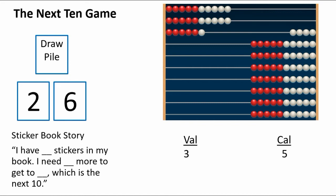When it's my turn, I'm going to turn over two cards, and I'm going to organize them either direction. I can either make this a 26 or a 62.